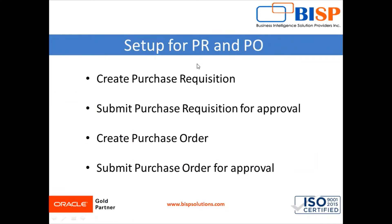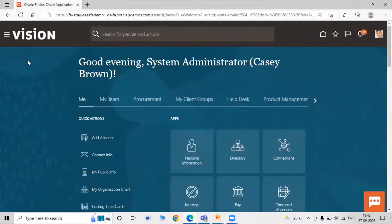Here are the steps for purchase requisition and purchase order. First, we create and submit a purchase requisition for approval, then we create a purchase order and submit it for approval as well. Let's go to our instance to begin.